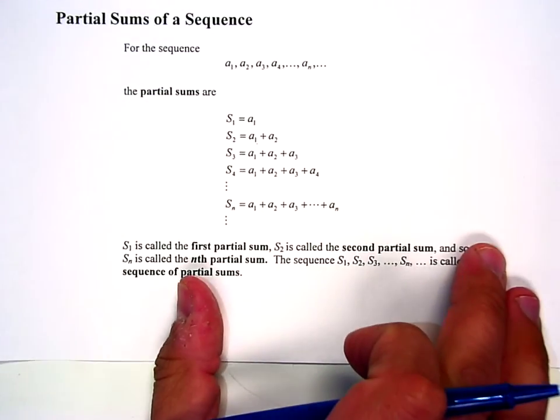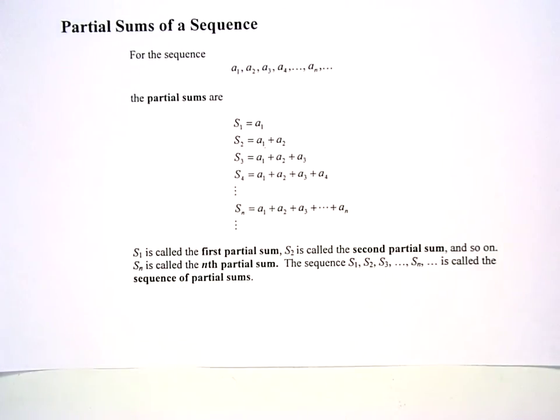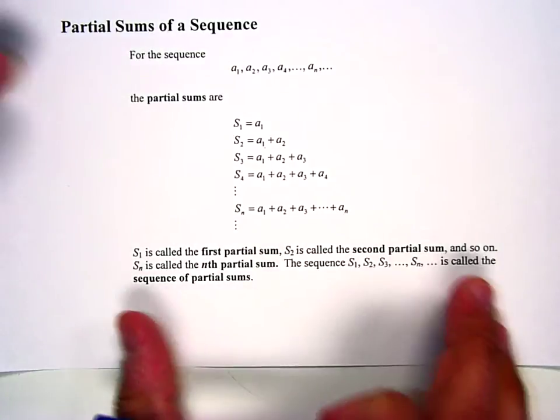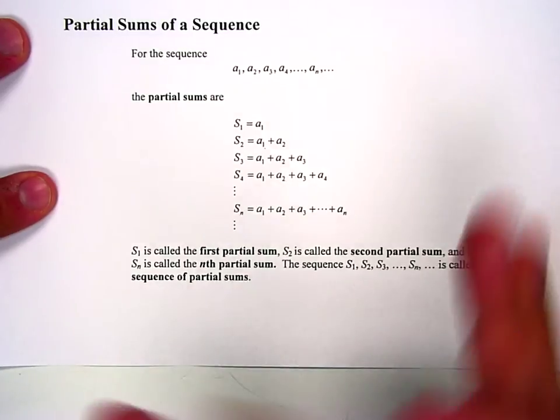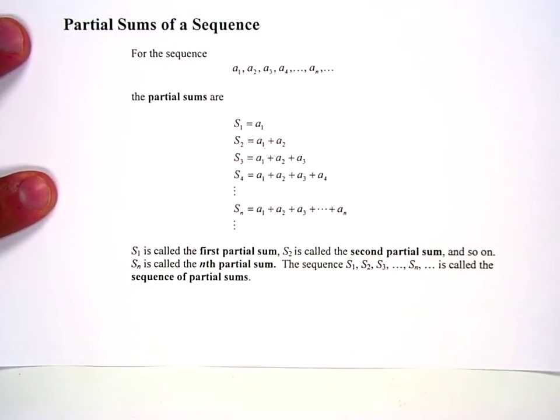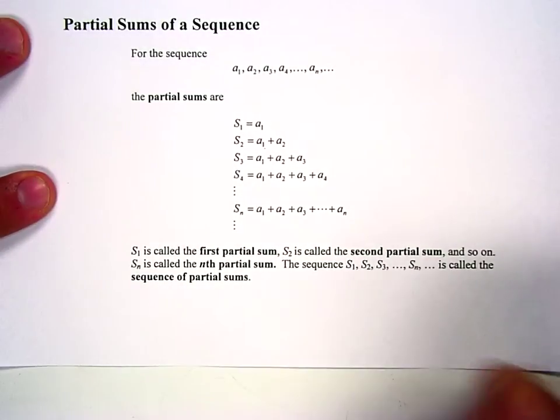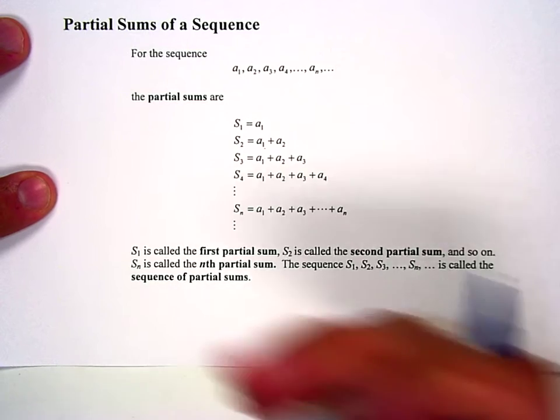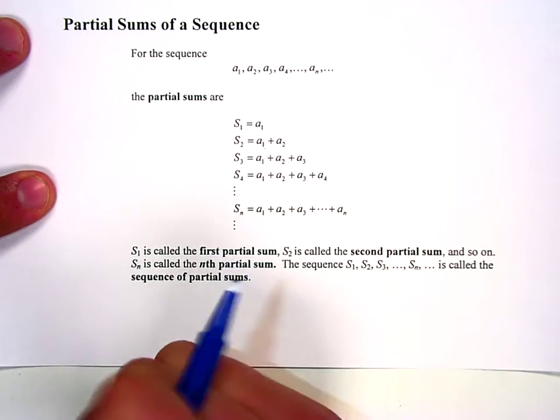All right, so this is the second video about 11.1. It's about partial sums of a sequence, and the partial sums is what we get when we add up parts of the terms. So we might add up the first three terms, we might add up the first four terms, we might add up the first ten terms.